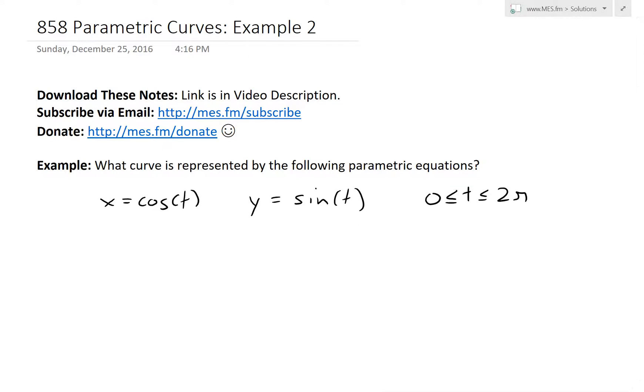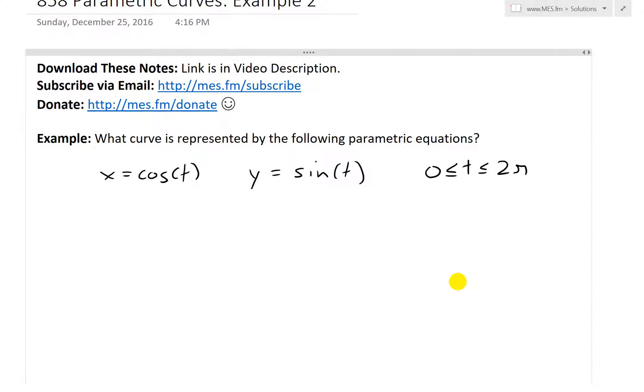Hi, it's time for another math easy solution. I'm going to discuss further into parametric curves and now go over example two of the example series, and basically solve this example which states: what curve is represented by the following parametric equations? We have x equals cosine of t, y equals sine of t, and where t is restricted to be between 0 and 2 pi.